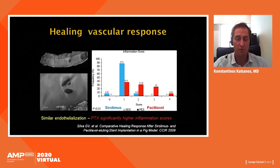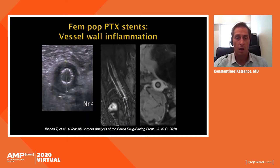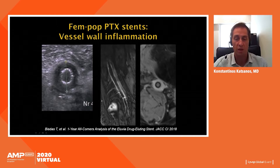Looking at healing vascular responses from animal studies in the coronary circulation, sirolimus is associated with significantly lower scores of inflammation compared to paclitaxel, although endothelialization scores appear similar. Regarding vessel wall inflammation, paclitaxel — because of its distribution in the outer vessel wall — seems to cause the same effect in the femoropopliteal segment, evidenced by hypoechoic vessel wall edema and contrast uptake at the outer vessel wall layer on contrast-enhanced MRA. Clinical significance remains to be seen.